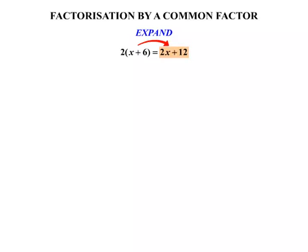If we go from the 2x plus 12 back to this form, that is known as factorizing. So factorization is the opposite of expanding the brackets. Let's look at some examples.